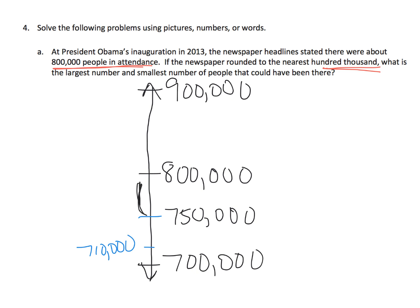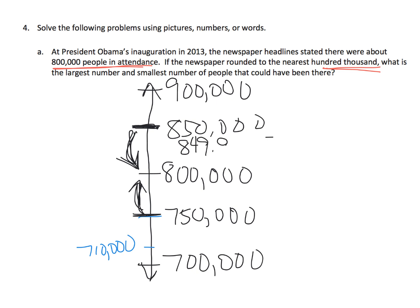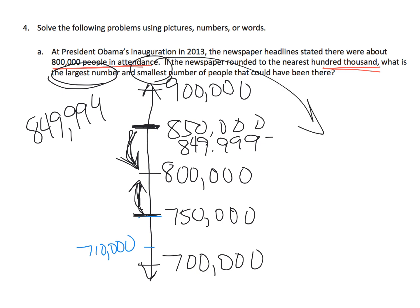Anything from 750,000 and up rounds up to 800,000. In the same way, the midpoint on the upper side is 850,000 — but really, anything from 849,999 and lower rounds down to 800,000. So the largest number is 849,999, which rounds down to 800,000, and the smallest number is 750,000.